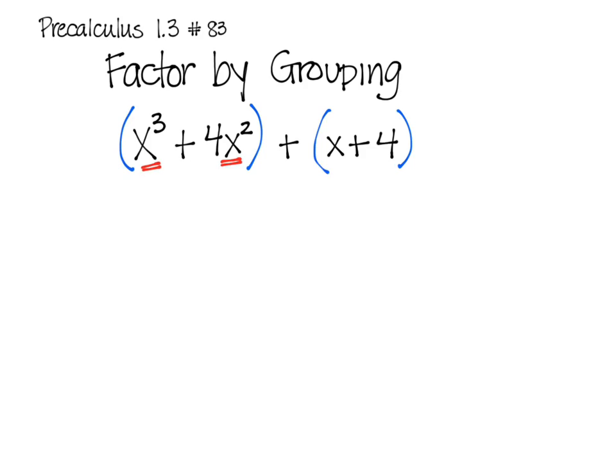I look in the first group and I notice that both of those terms have an x. Not only do they have an x, but they both have x squared. This x cubed can be seen as x times x squared. So this has got an x squared as a factor, and this has an x squared as a factor. So I'm going to factor out that x squared.